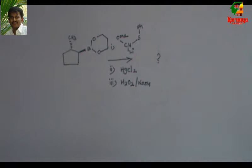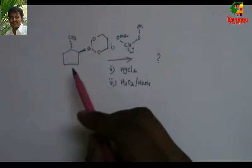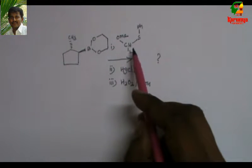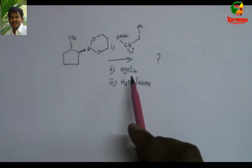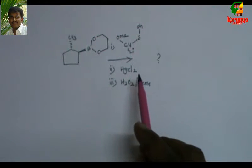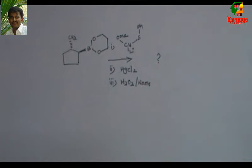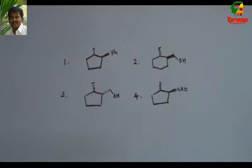Today I am going to solve a problem on homologation in organic chemistry. You can find this problem in CSIR NET exam 2015 December. Here is the problem: when this organoborane is treated with this lithium anion followed by mercury chloride then H2O2 NaOH, what is the product?